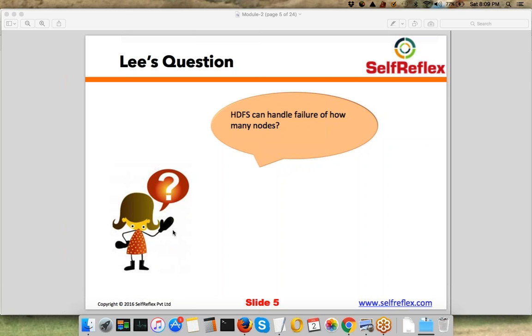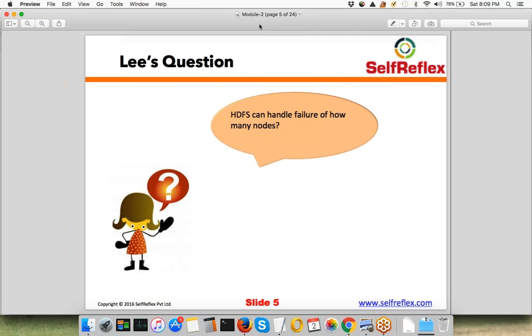So basically, as we discussed, if you have set the replication factor to be n, you can handle failure of n minus 1 nodes, right? Yep, so that's right. I'm happy with your answers.